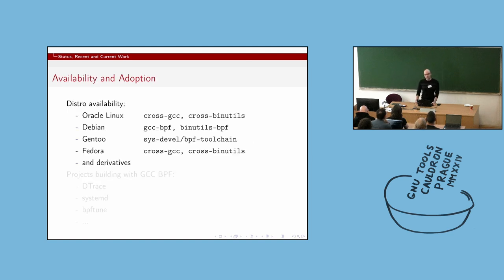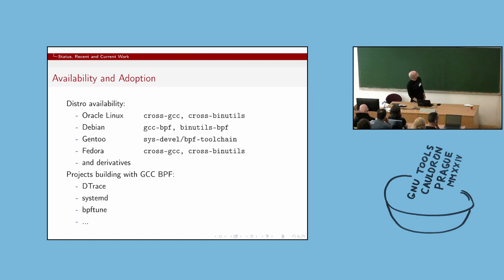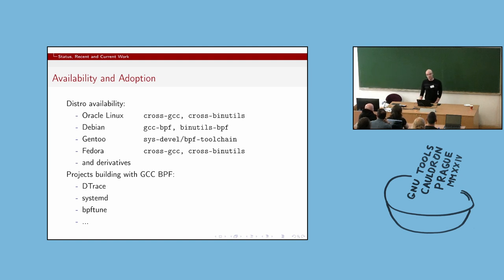Now that it's a usable thing, people are starting to use it. It's been shipped in Oracle Linux for a while. It's been picked up and shipped in the GCC BPF cross-compilers in Debian, Gentoo, and Fedora. In Gentoo, they're starting to build the BPF portions of systemd with GCC instead of Clang. That's exciting not only for us as the GCC people, but also for people who don't want to carry around a large LLVM install.